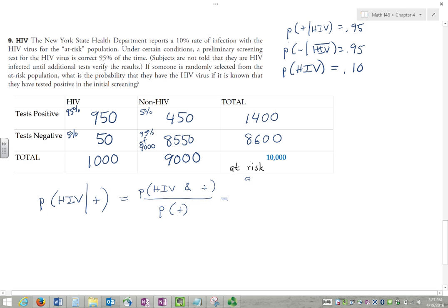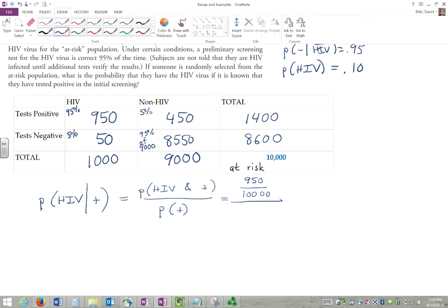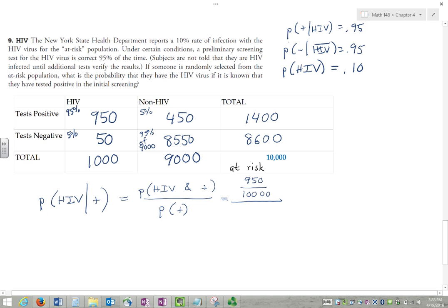HIV and positive. So that's this. That's that 950. And now the probability of being positive is 1,400 over 10,000.